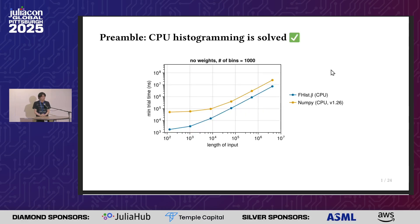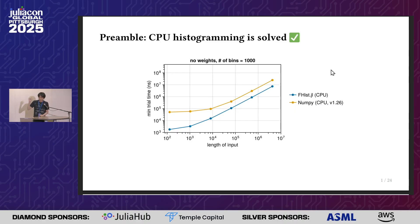A preamble to making histograms on GPUs is that making histograms on CPUs is mostly solved. There's probably two or three packages that do fast CPU histogramming. The domain I come from wants histograms to also accumulate variances for each of the bins — that's why we have our own — but overall it's a solved problem.